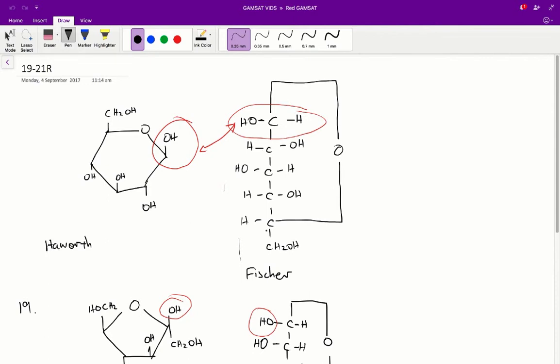The most important thing to do is to orientate yourself. So I always like to look at the carbon to the right of the oxygen and the top carbon in the Fischer structure because they're the same carbon. And from there sort of orientate myself.